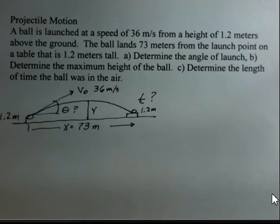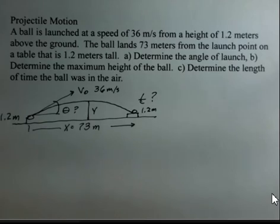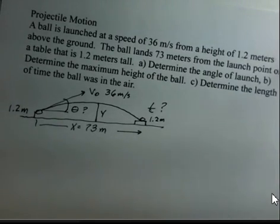This is an example problem for projectile motion. We're going to let a ball be launched from a height of 1.2 meters above the horizontal. Let's make that horizontal line.